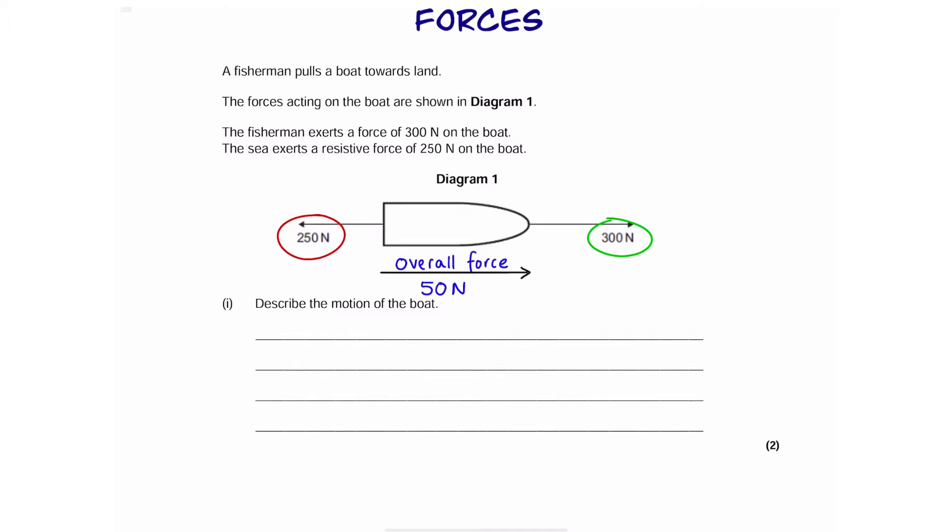Describe the motion of this boat. First of all, we can see that they are not balanced. There's an overall force moving towards the right or forward by 50 Newtons. That means the boat will be moving forward. Also, it will be accelerating, and that's because there's an overall force right now.